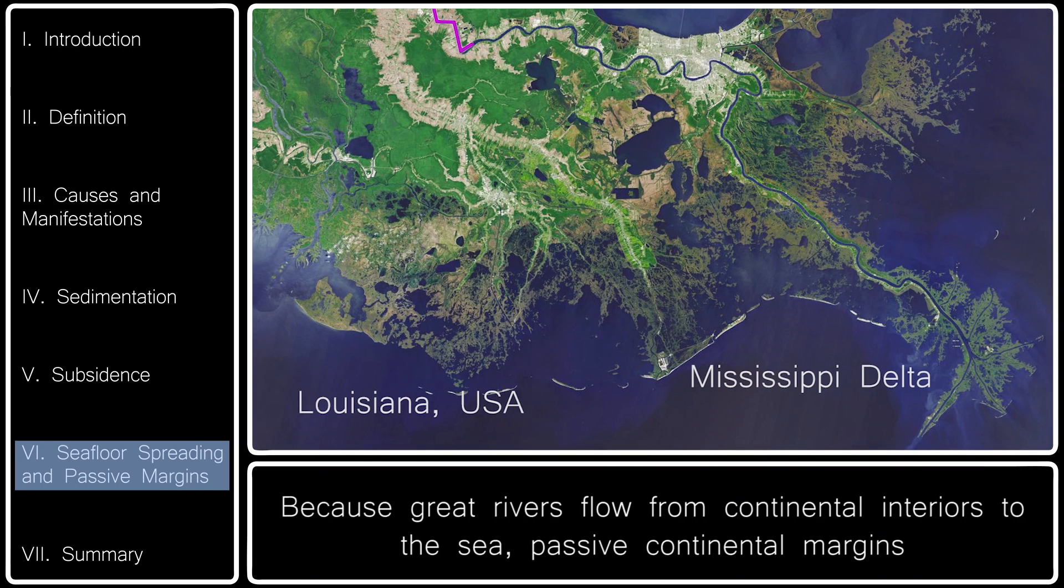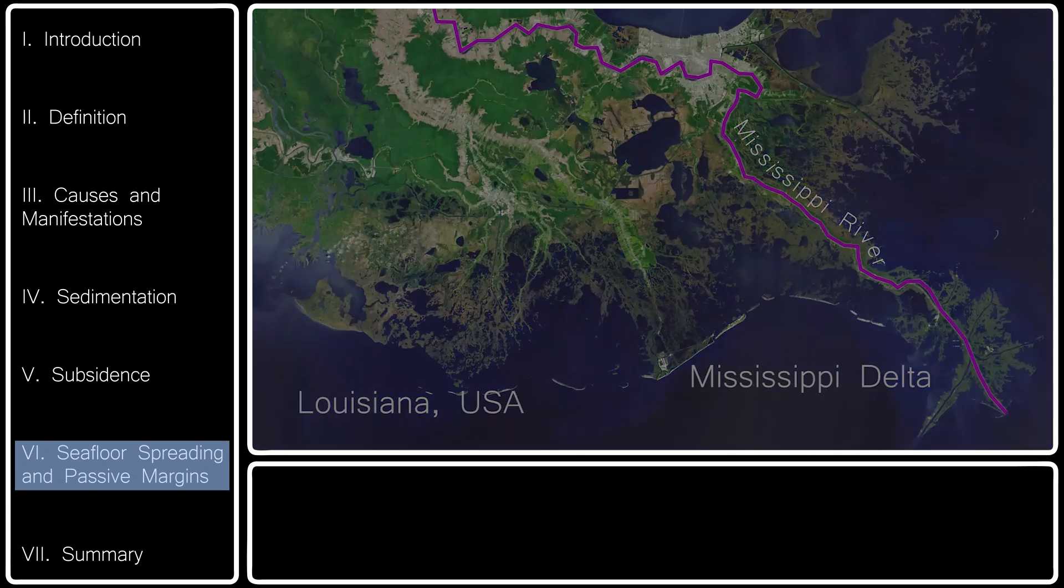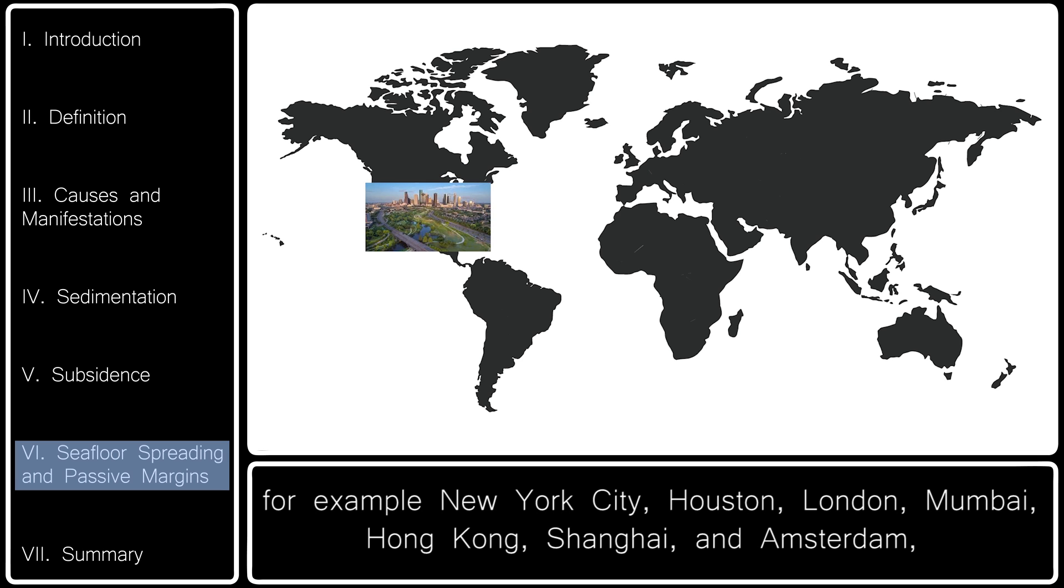Because great rivers flow from continental interiors to the sea, passive continental margins are where most sediment is deposited. Important cities have grown up where great rivers flow into the sea, for example, New York City, Houston, London, Mumbai, Hong Kong,